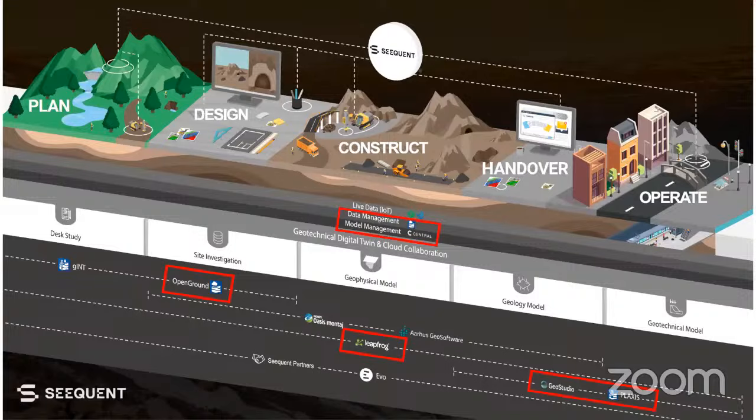This slide shows where each of those products sits within the life of a typical civils project. Leapfrog is there throughout the whole journey, creating and evolving the 3D geological model. As an early step, Leapfrog takes the most relevant data from our geotechnical information management platform — and that is Open Ground. With the help of our cloud-based model management platform, Central, we can directly send critical portions of our Leapfrog model — sections or 3D models — to our geotechnical analysis tools, Plaxis and Geostudio. Open Ground is for ground investigation data management; Central is for model management.